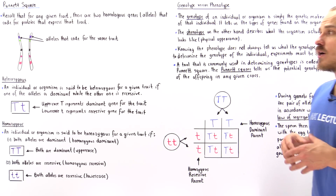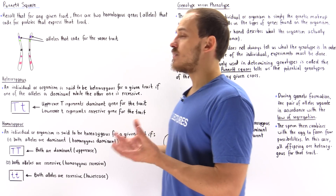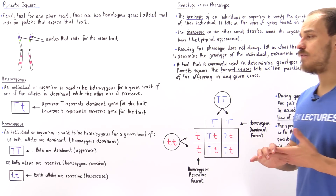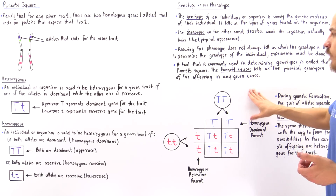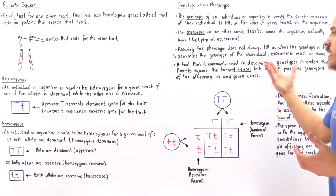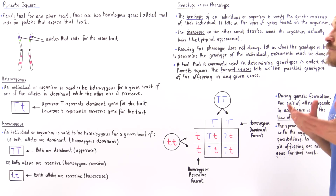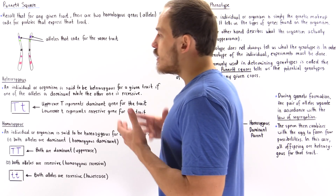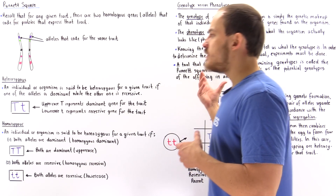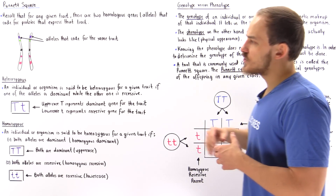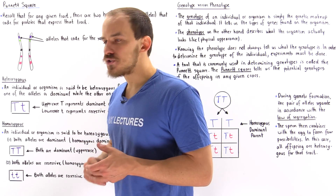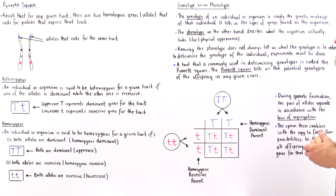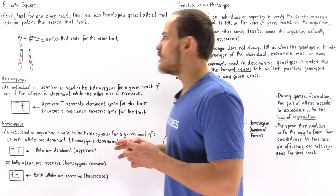What the Punnett Square allows us to do is basically uncover the type of genes that will be found within a given individual. Before we examine what the Punnett Square is and how we can use it, let's discuss four important terms we must know when dealing with Punnett squares: heterozygous, homozygous, genotype, and phenotype.